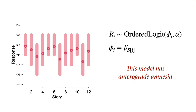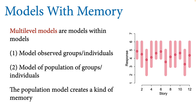When the model learns about one story it should be updating its prior, and that will help it learn about the others faster. We're going to make new kinds of models that do not exhibit anterograde amnesia. These models are often called multi-level models because they are models within models. The first thing we do is model the observations at group or individual levels — like the responses in the trolley problem data — and at the same time we have a model of the population of those groups or individuals: their average and their dispersion. That sub-model creates a kind of memory, allowing us to transfer information from one group to another within the model.